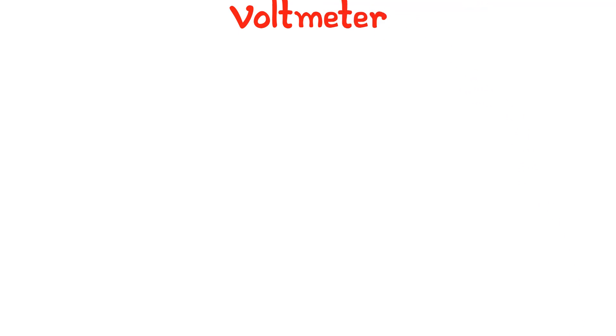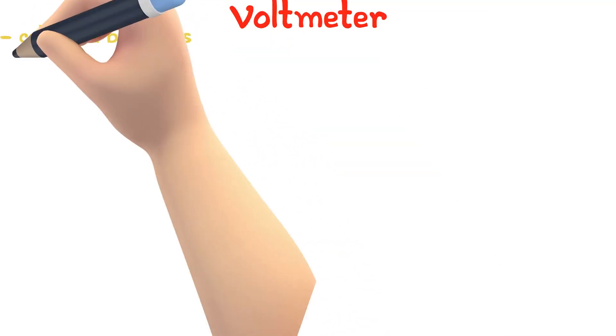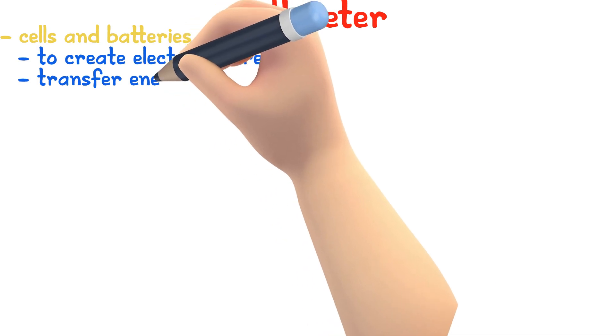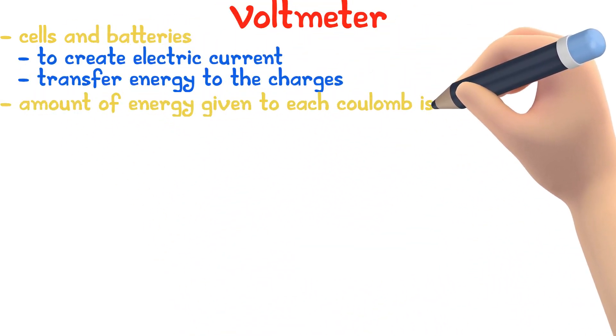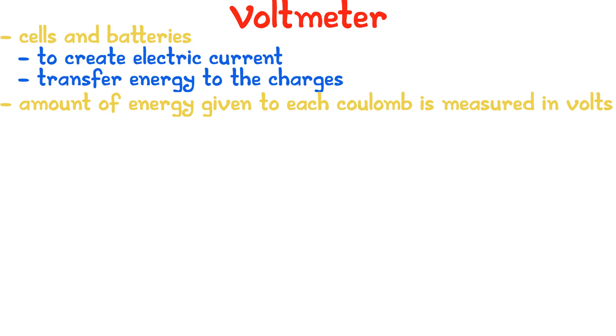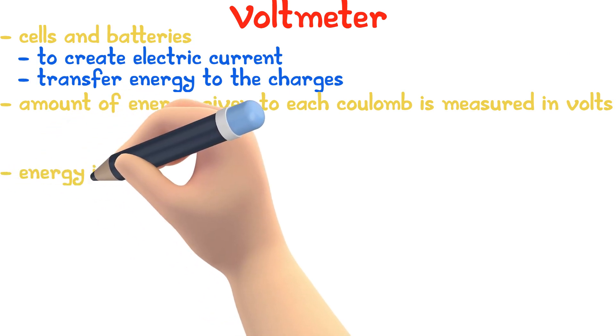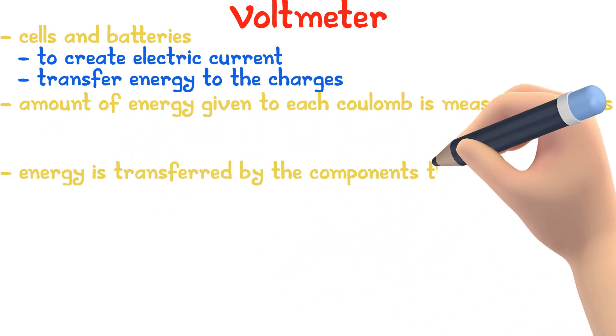Cells and batteries are used to create electric current. They transfer energy to the charges. The amount of energy given to each coulomb is measured in volts. So as the charges flow, the energy is transferred by the components that they pass through.